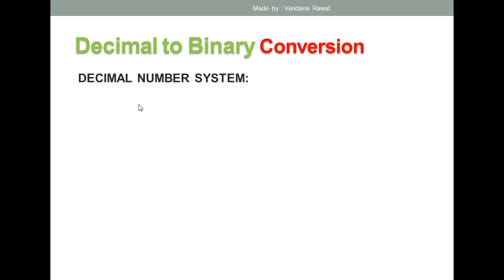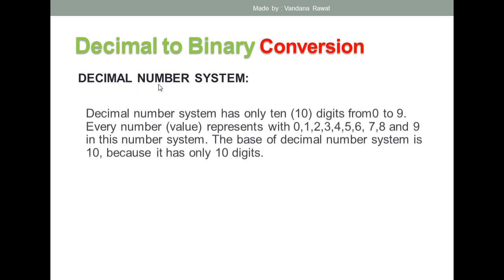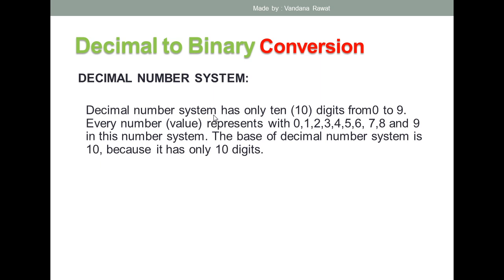Let's look at decimal to binary conversion. First, what is the decimal number system? The decimal number system has base 10. That means digits start from zero and go up to ten minus one, which is nine. In decimal, every number is represented using digits zero through nine.